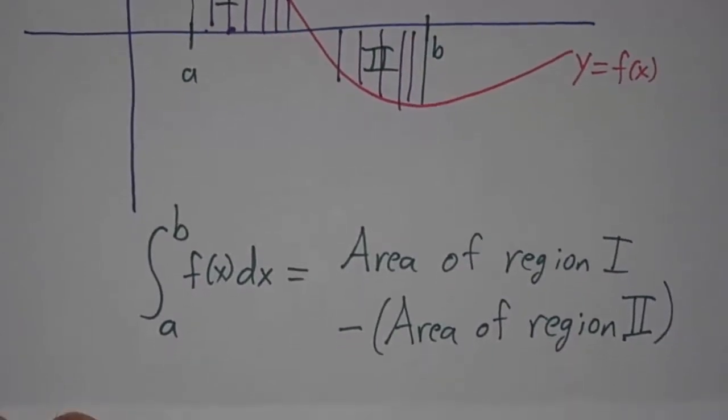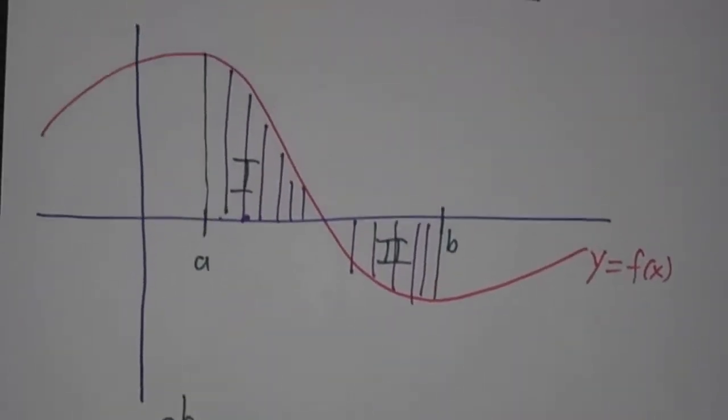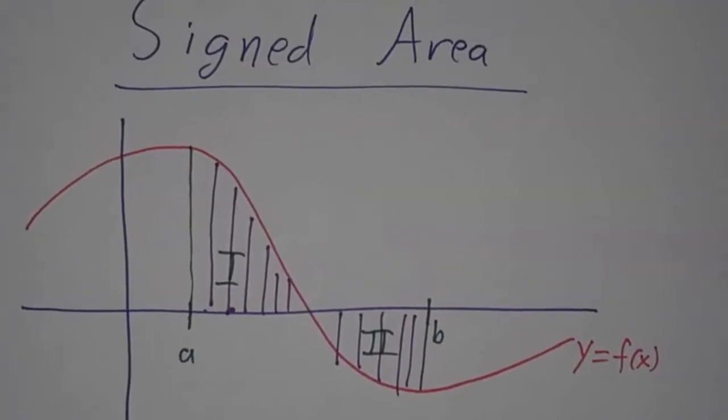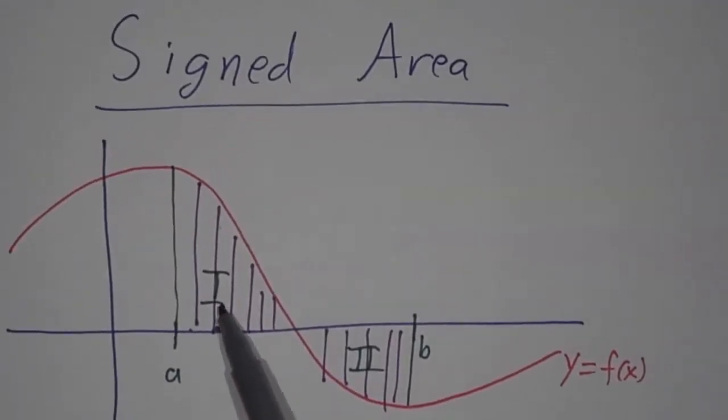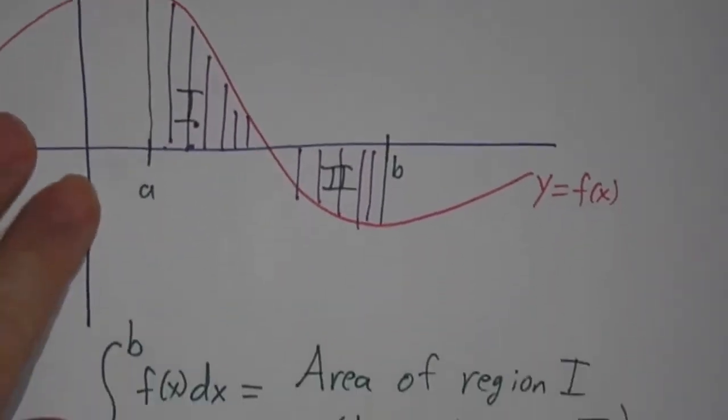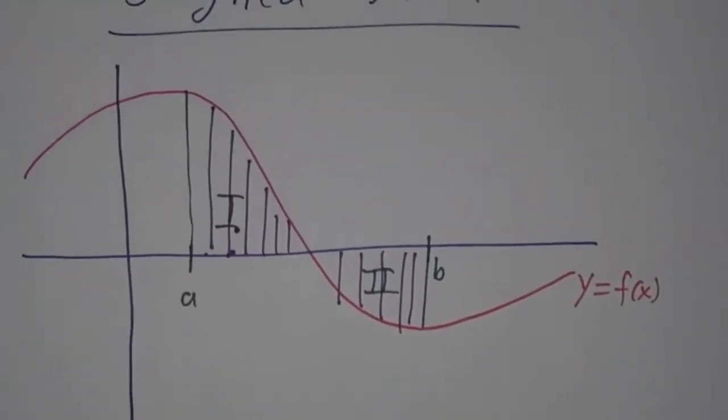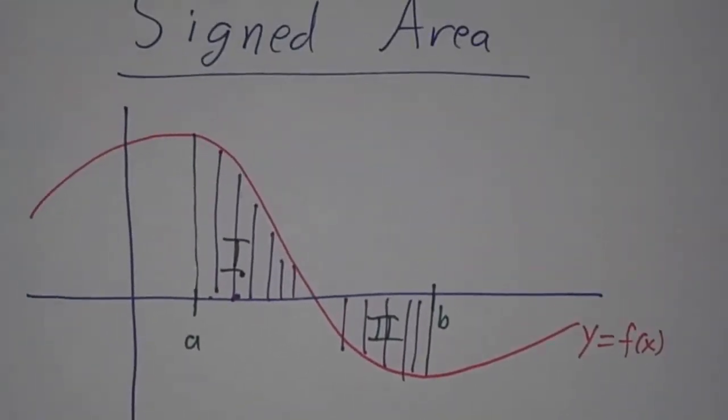And we call this a signed area because we're not literally counting area, we're counting this area positive where the function is positive, we're counting this area negative where the function is negative. But we usually get sloppy and even though we're technically talking about signed area, we still call it the area under the curve, even though strictly speaking, it's a signed area.